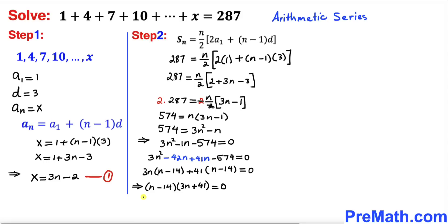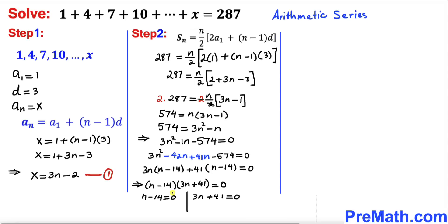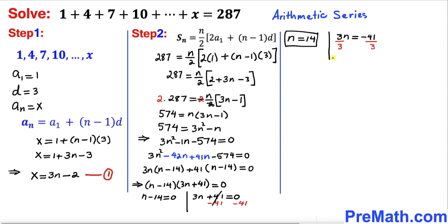Since n minus 14 is common, we factor it out to get n minus 14 times 3n plus 41 equals 0. Separating the two factors: from n minus 14 equals 0, we get n equals positive 14. From 3n plus 41 equals 0, subtracting 41 from both sides gives 3n equals negative 41, so dividing by 3 gives n equals negative 41 over 3.